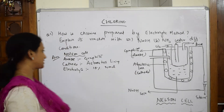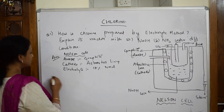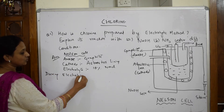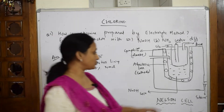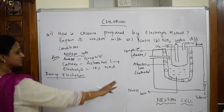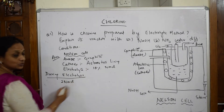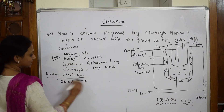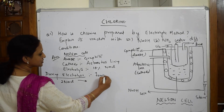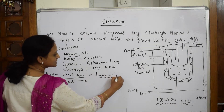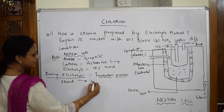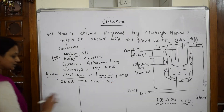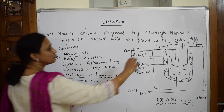During the electrolysis process, when current is supplied into the cell, the solution ionizes. The electrolyte is NaCl. We take two moles of NaCl — this makes it easy because two moles of chlorine gas will evolve. The ionization process: 2NaCl → 2Na⁺ + 2Cl⁻. This is important — please write the ionization process in the exam.